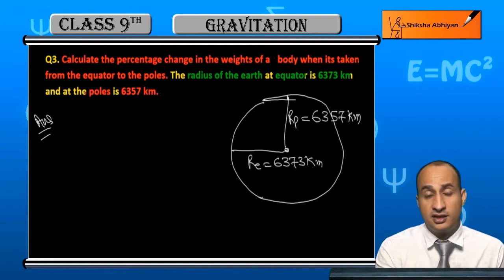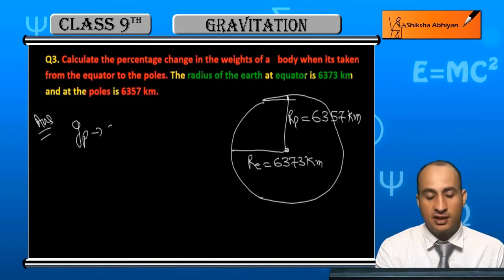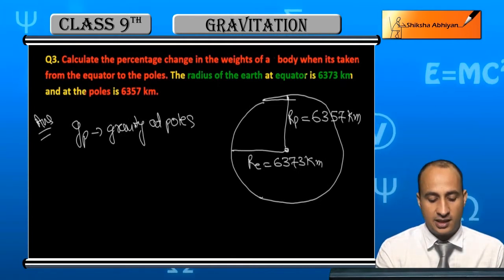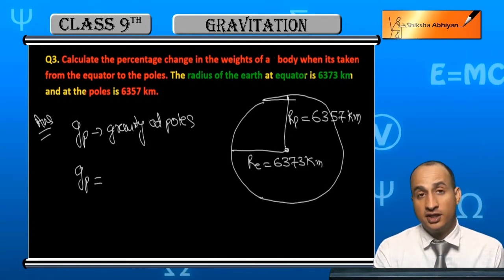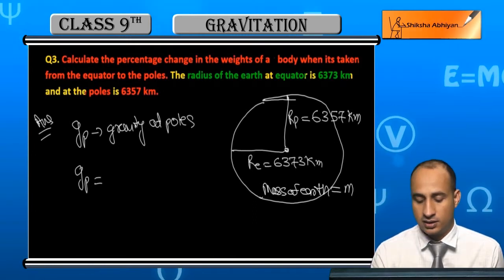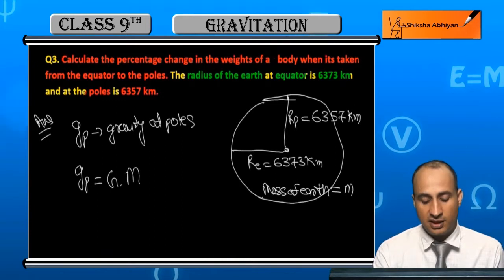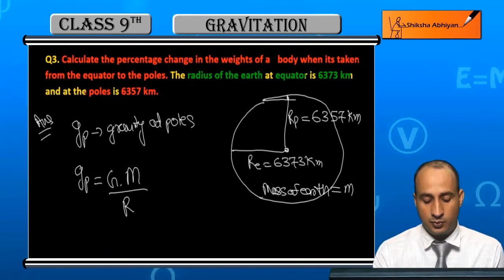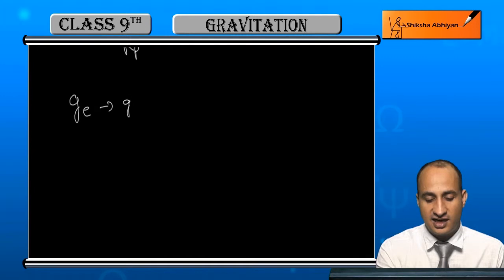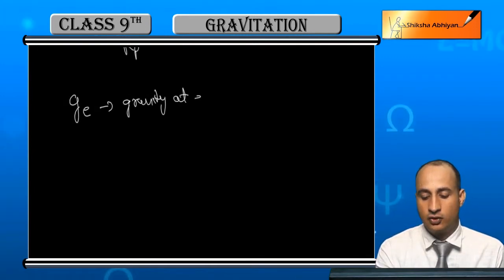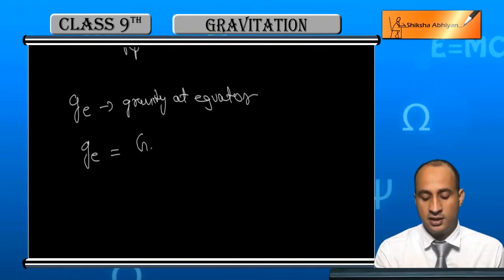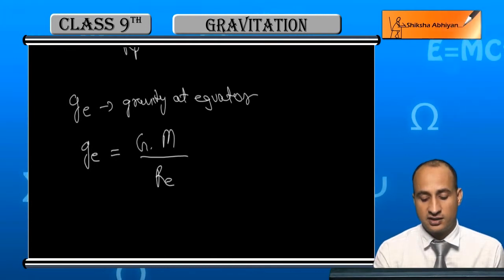Now, gravity at poles, GP, is equal to G times mass of Earth (M) upon the radius at poles squared. Similarly, gravity at equator, GE, is equal to G times mass of Earth (M) upon the radius of Earth at equator squared.